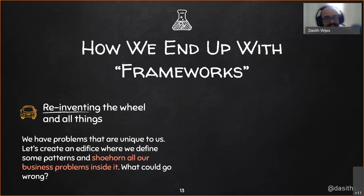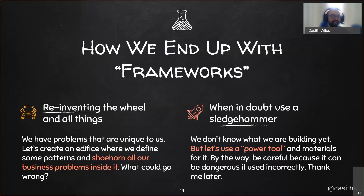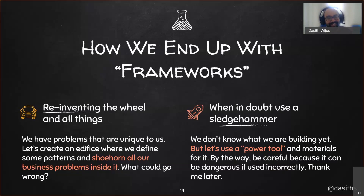We end up creating frameworks based on false assumptions. Then when the domain understanding eventually evolves, we bend and twist our business problem to work with the framework we created before. The second way is using a sledgehammer approach. This is more common with teams new to building microservices — they use a ready-made framework that solves many problems but invites over-complexity very early. This is similar to putting a V8 engine in your lawnmower: it might work, but you'll spend more time maintaining the engine than cutting grass.